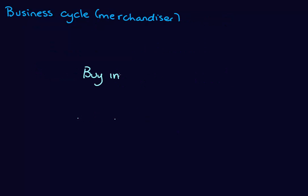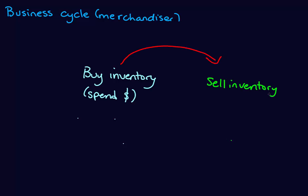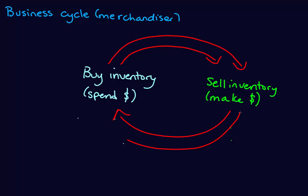The business cycle for a merchandiser looks like this: the business buys inventory, spending cash, and sells the inventory for a profit, making money. They then use that money to buy more inventory, which they again sell for profit, and so on. This video is going to focus on buying the inventory under the periodic method.